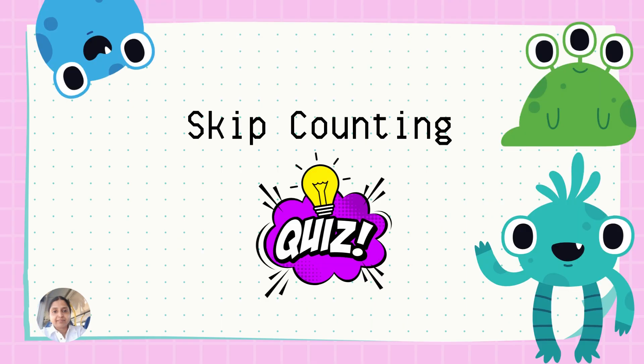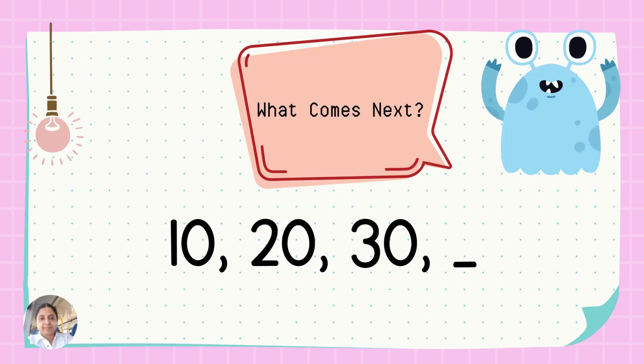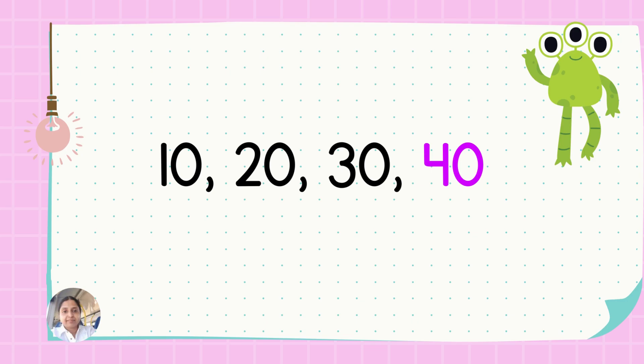Great! Here is a fun skip counting quiz for all my lovely children. I will give you a starting number and you have to skip count in tens. You then have to fill the missing number. Let's get started! Start with the number ten and skip count by tens. Fill in the missing number. Can you tell me what comes after thirty? That's right! The missing number is forty. Forty comes after number thirty.